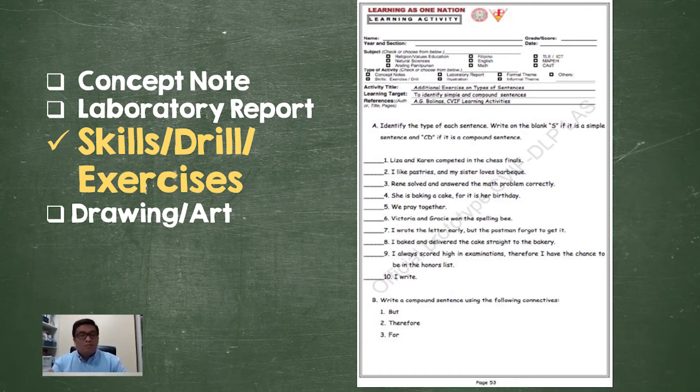It can come in two parts. The first test type will be about identifying if it is a simple sentence or a compound sentence, and then for the second part, we will ask our students to write a compound sentence using the following connectives. Notice that for skills drills and exercises, this can be helpful in any subject—math, science, English, Filipino, and social studies—where we think that additional exercises are needed after we present the lesson in the form of the concept notes.